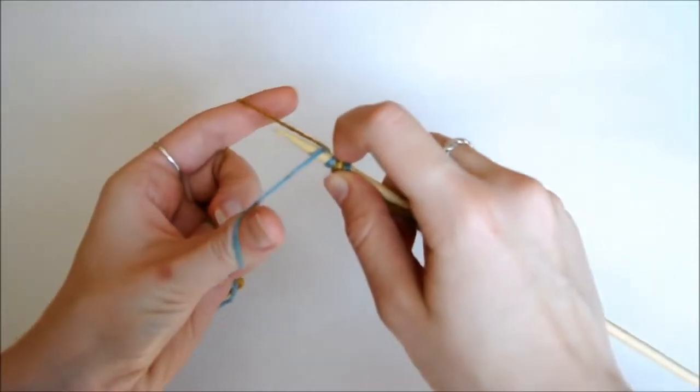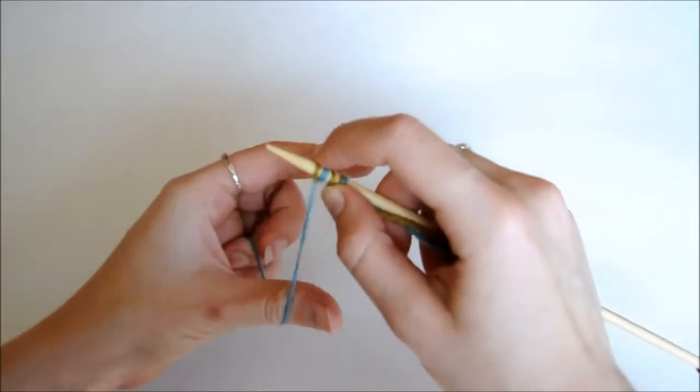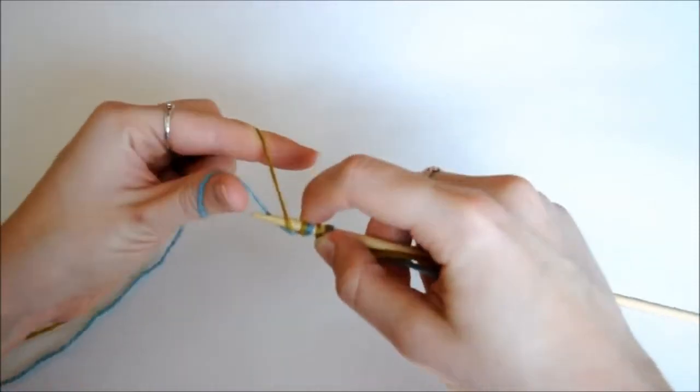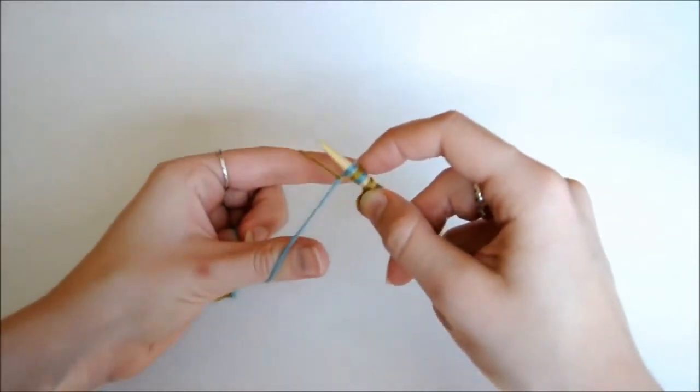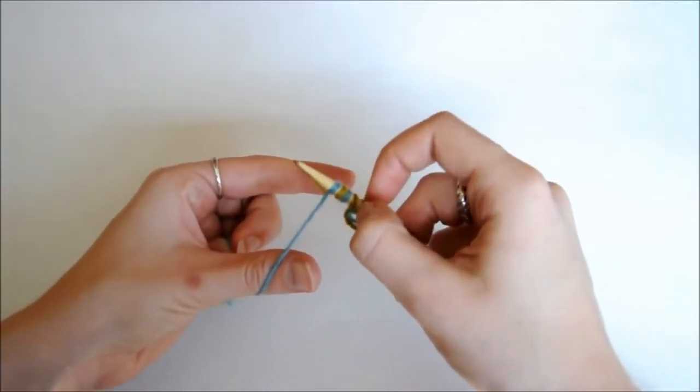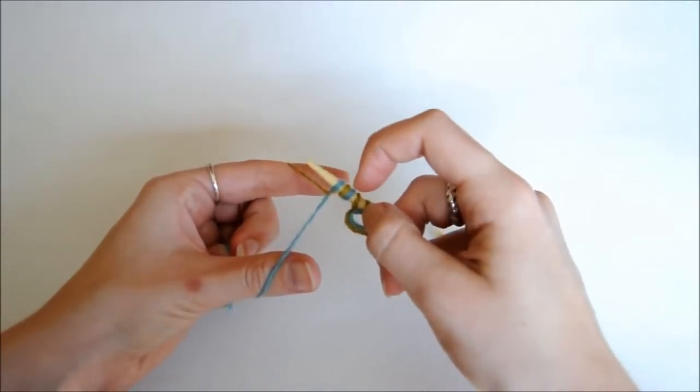And for double knitting, we're going to work in pairs. So if your chart has four stitches on it, that means you're actually going to need four pairs of stitches, which is eight in total.